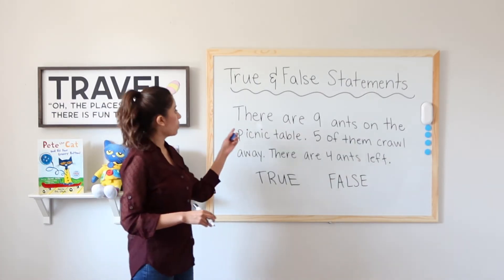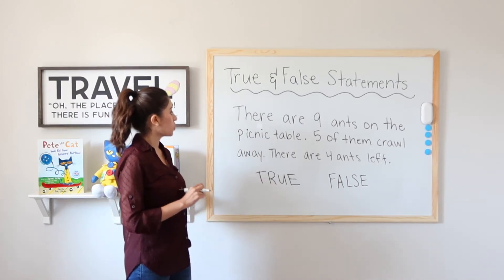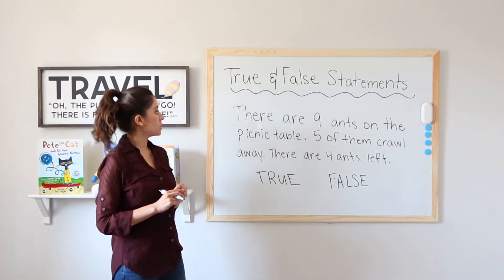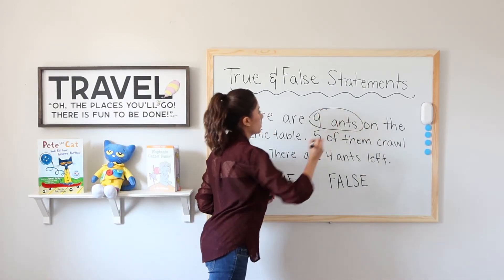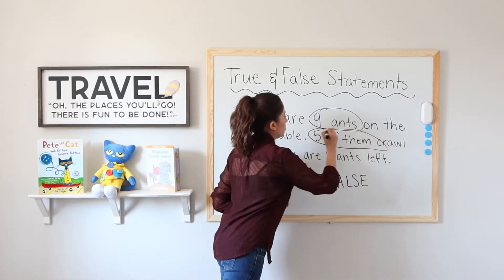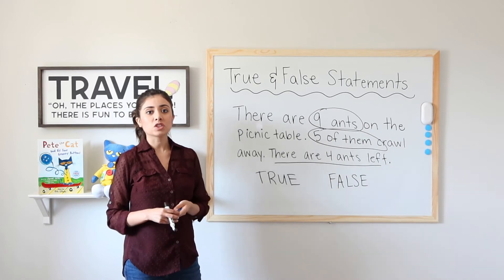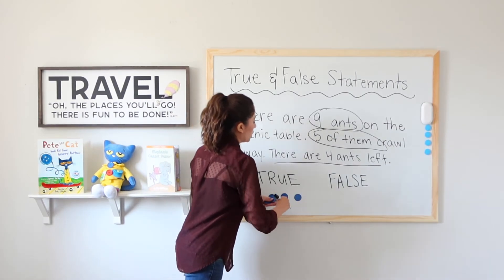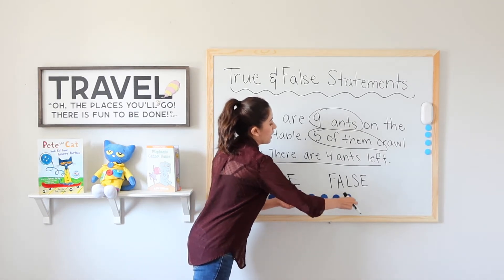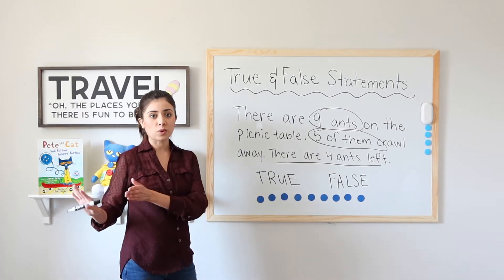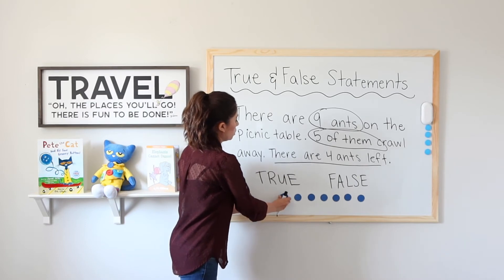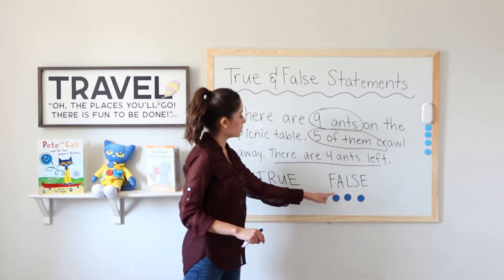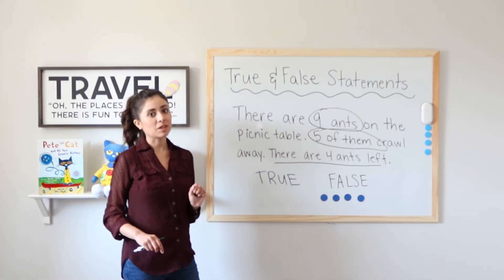Ready for our word problem? There are 9 ants on the picnic table. 5 of them crawl away. There are 4 ants left — is this statement true or false? I know there are 9 ants on the table and 5 crawl away. Let's use our magnet counters: 1, 2, 3, 4, 5, 6, 7, 8, 9. Take away 5 — 1, 2, 3, 4, 5. Do I have 4 ants left? 1, 2, 3, 4. Yes, I do. Therefore, this statement is true.